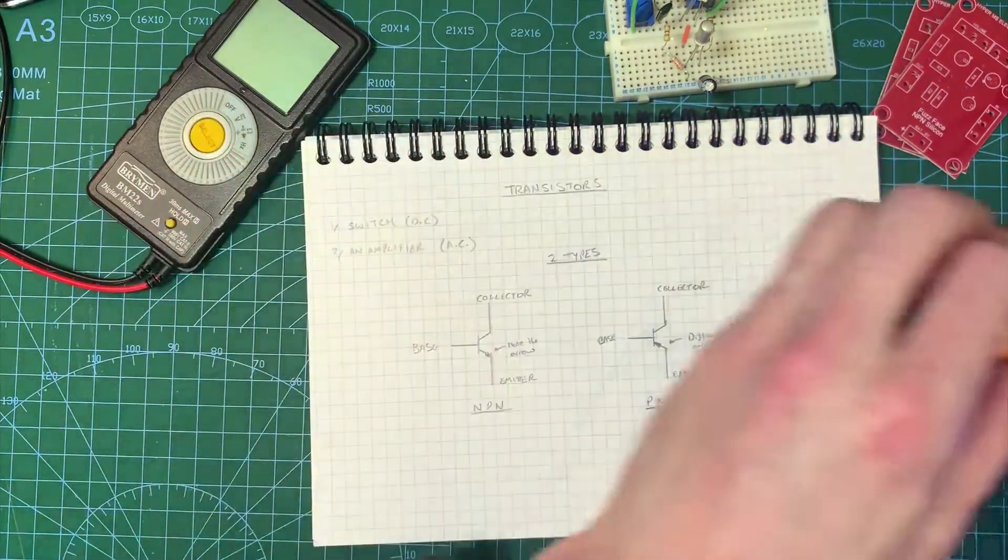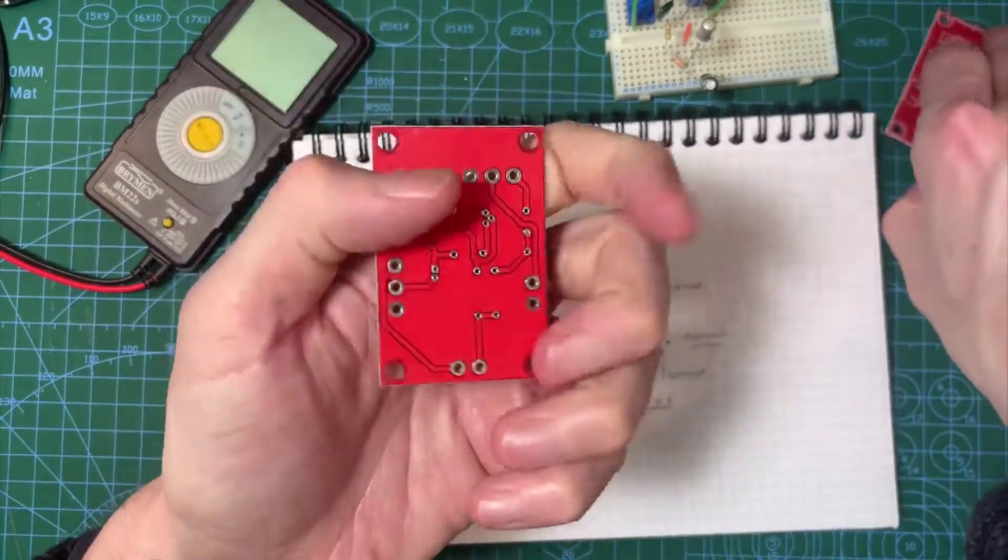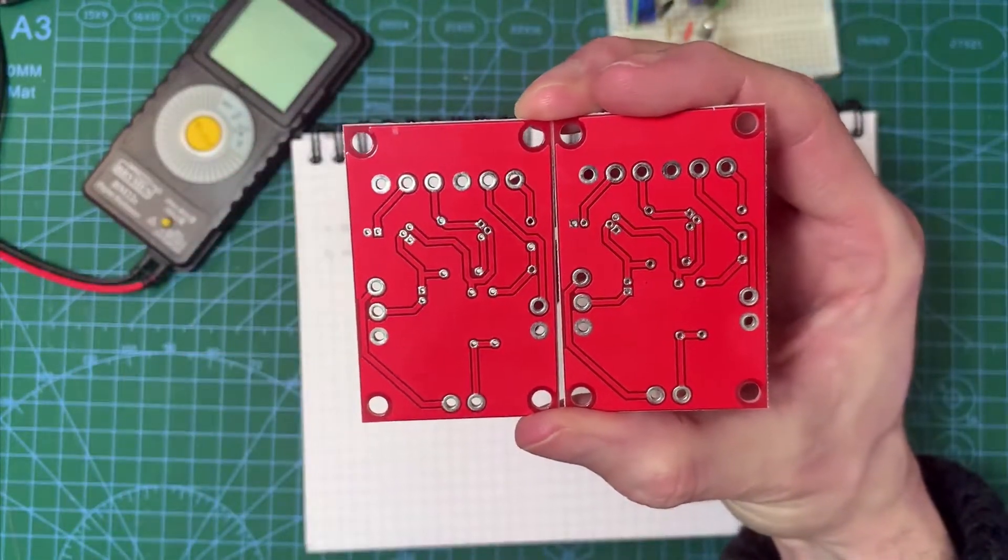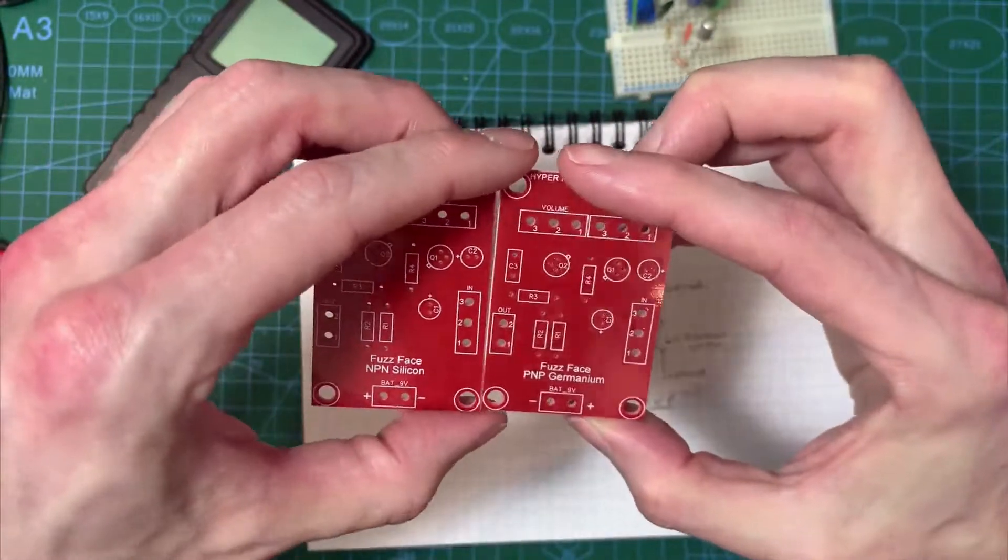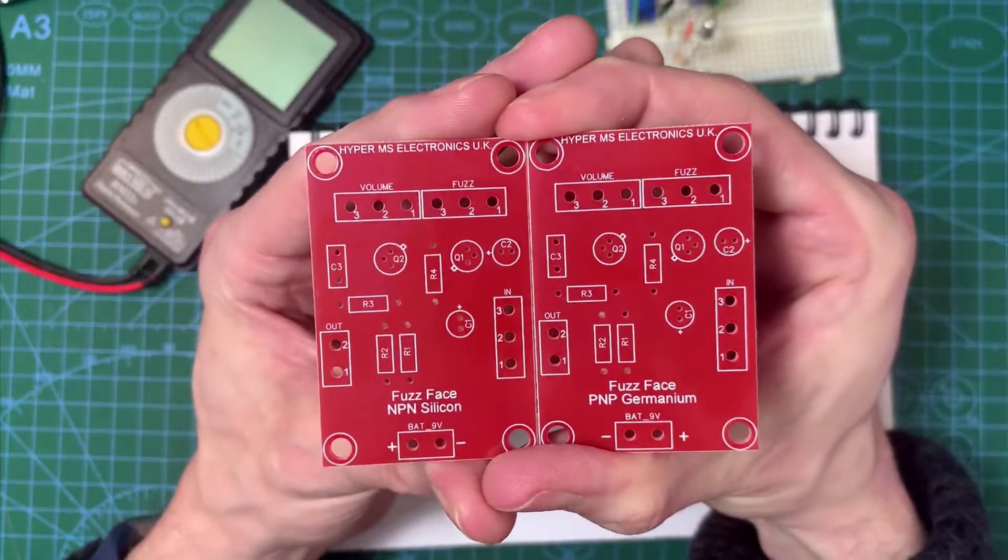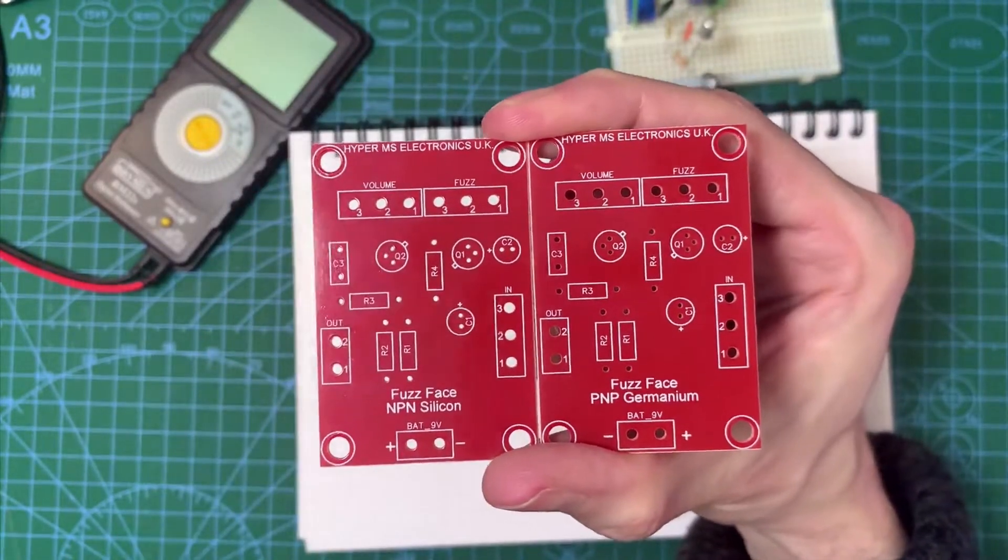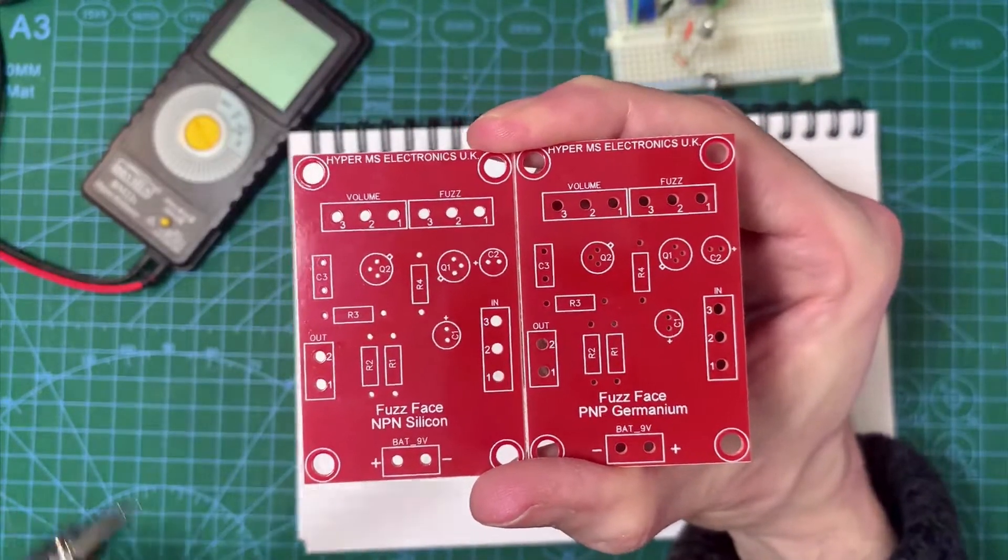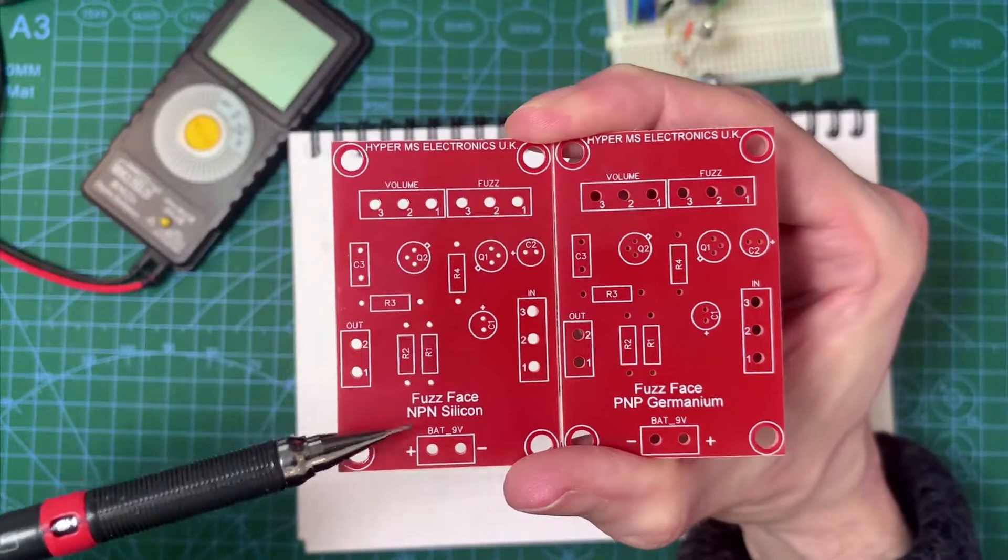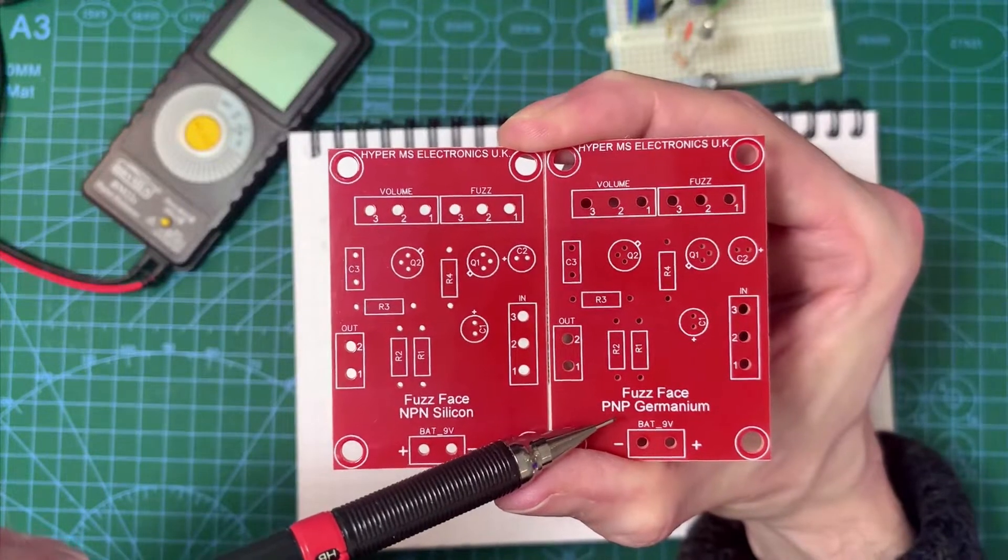So when we look at the circuits for the fuzz face, and here's some PCBs to build the fuzz faces on, you'll see that these look absolutely identical. And even if we turn them over, you'll see apart from some of the writing, they're perfectly identical. Now the thing that's different about them is at the bottom.